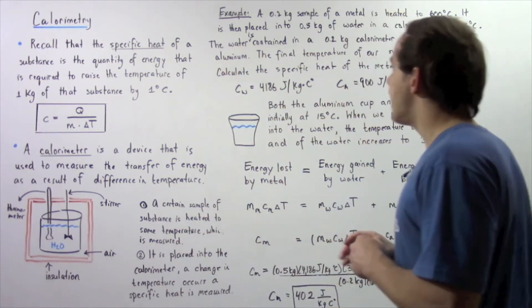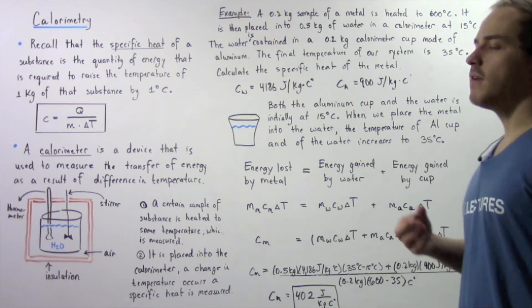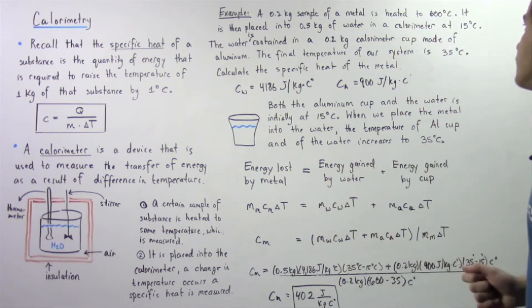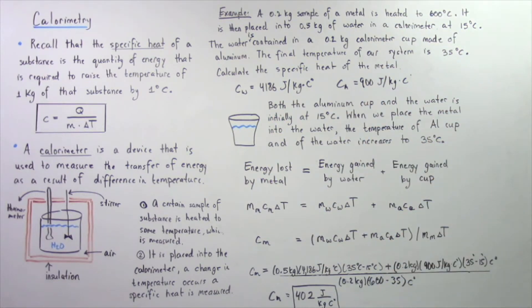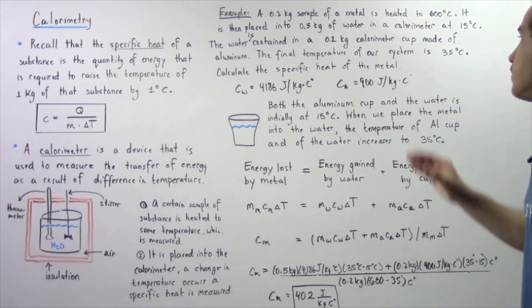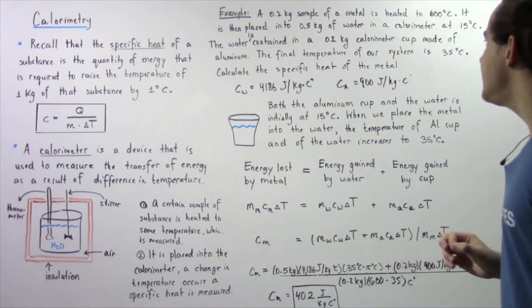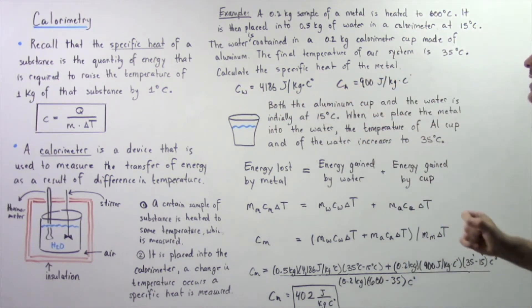Let's look at the following example. A 0.2 kilogram sample of an unknown metal is heated to 600 degrees Celsius. It is then placed into 0.5 kilograms of water in a calorimeter at 15 degrees Celsius. The water is contained in a 0.2 kilogram calorimeter cup made of aluminum. The final temperature of the system is 35 degrees Celsius. Calculate the specific heat of the metal, given the specific heats of water and aluminum.